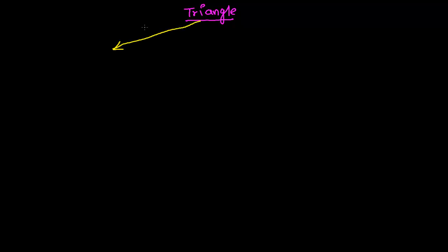We can classify triangles on two bases. The first basis is the sides — how are the sides of the triangle. Based on that, we can classify triangles. The second basis is the angle, or the corner of the triangle. So based on the angle or vertex, we can classify the triangle, as well as based on the sides.